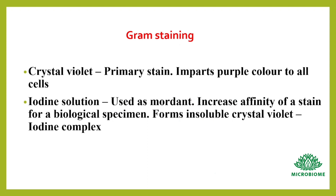First, crystal violet is the primary stain — it imparts purple color to all cells. Next, iodine application: it is used as a mordant, that is, it increases the affinity of the stain for the biological specimen. It forms an insoluble crystal violet-iodine complex.